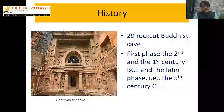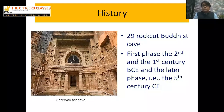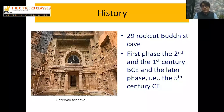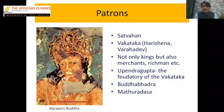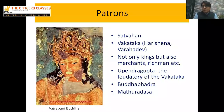Generally we think Ajanta and Ellora caves are very close, but they are actually 100 km apart. There are 39 rock-cut caves showing Buddhist architecture and Buddhist culture. The caves were built in two phases: the first phase is in the 1st century BC and the second phase is in the 5th century CE. Major patrons included the Satavahana kings, the Vakataka kings, and the minister Harisena.